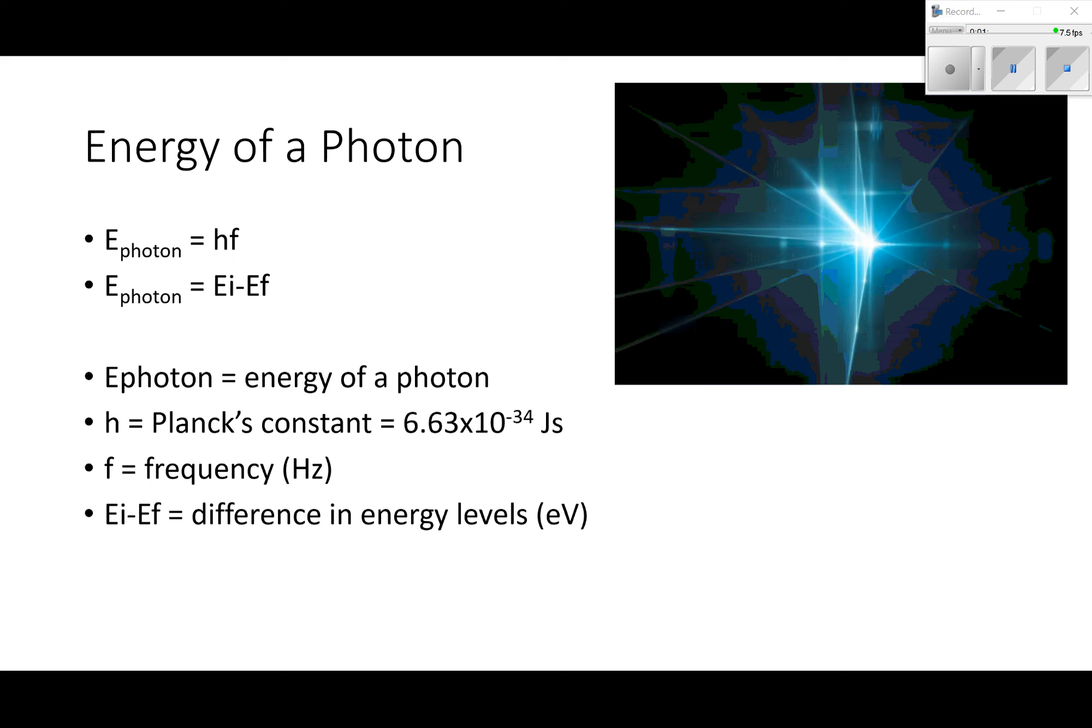Energy of a photon - there's two equations. E photon equals hf, which we did in the electromagnetic waves unit, and E photon equals Ei minus Ef. You do that using the energy levels that we talked about last time. These are the two equations to get the energy of a photon. h is Planck's constant, it's given on the reference table, f is frequency, and Ei minus Ef is the difference in energy levels - we just subtract them.